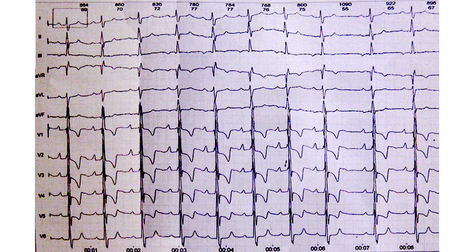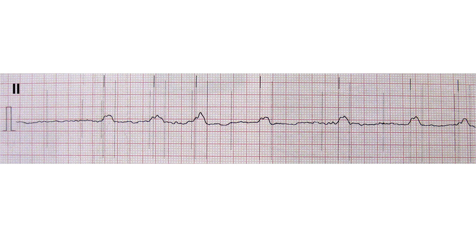12-channel ECG machines record all 12 leads simultaneously. A rhythmogram is usually not recorded in this case.